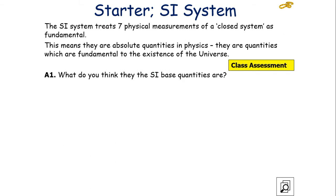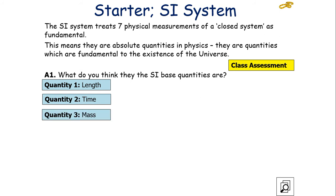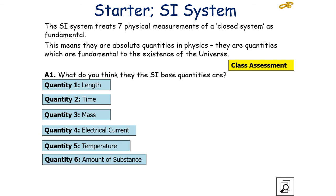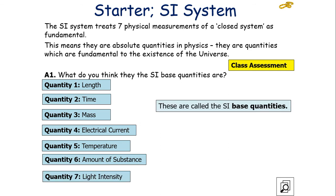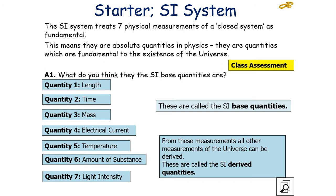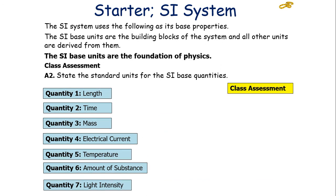These are called the SI-base quantities. This means they're absolute quantities in physics. They are quantities which are fundamental to the existence of the universe. These are the base quantities which can be used to describe everything in the universe. So, what are our SI-base quantities? We've got length, time, mass, electrical current, temperature, amount of substance, and light intensity. All of the other quantities in the universe can be derived from these seven base quantities. So, these are what we call the SI-derived quantities.